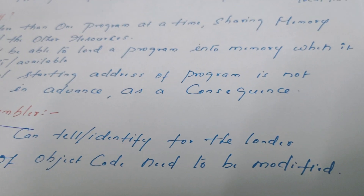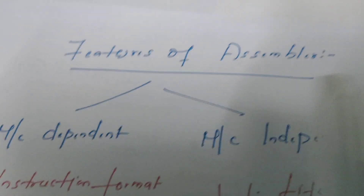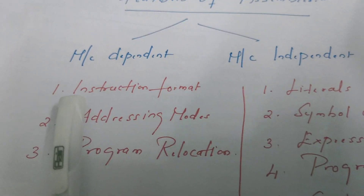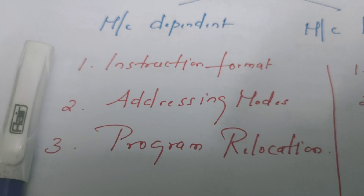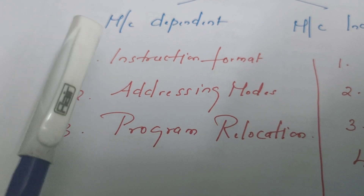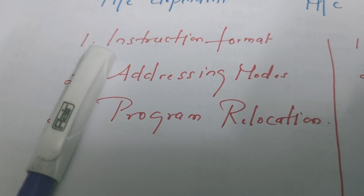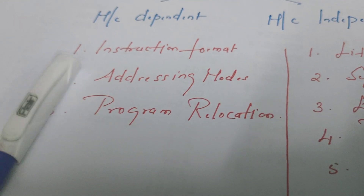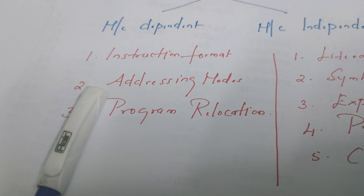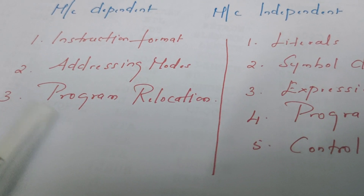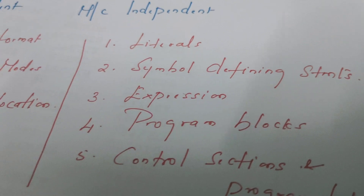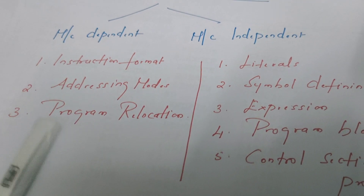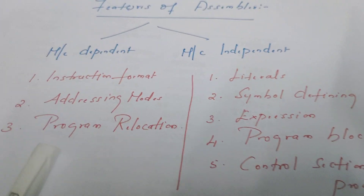In general, the features of an assembler include machine-dependent features and machine-independent features. Machine-dependent features depend on the architecture of the machine — that is why we call them machine-dependent. Instruction format depends upon the architecture of the machine. Addressing mode and program relocation are also machine-dependent features; they depend upon the memory and instruction format supported by the machine.